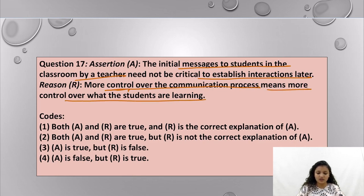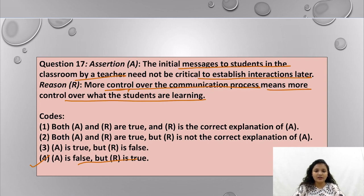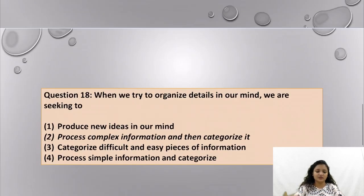The reason given is that more control over the communication process means more control over what students are learning. If you prevent students from communicating with each other, that will hinder their learning. So the assertion is wrong and the reasoning is correct. The initial messages by a teacher are important, and controlling the communication process does affect student learning.